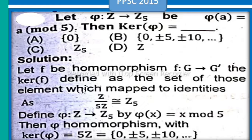Solution: Let f be a homomorphism from G to G prime. The kernel of f defines as the set of those elements which map to identities. As Z divides 5, Z is approximately equal to Z5.